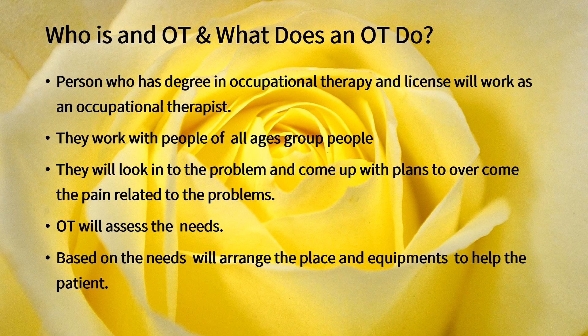After assessing the needs, based on those needs, they will arrange places and equipment to help the patient. Occupational therapy finds solutions to overcome the problem. For example, if a person cannot sit on the toilet properly, they will raise the toilet seat height. If they cannot eat with a spoon, they find a way to help. If they have problems putting on a button, they find other ways to wear shirts instead of using buttons.